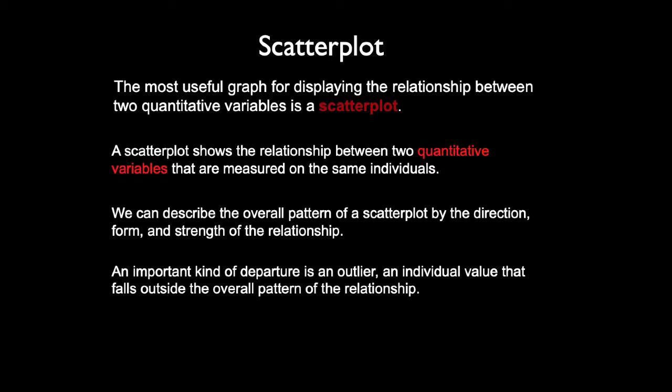An important kind of departure is an outlier — an individual value that falls outside the overall pattern of the relationship. We can use a scatter plot to understand the relationship between two quantitative variables, including direction and strength, and also to recognize outliers.